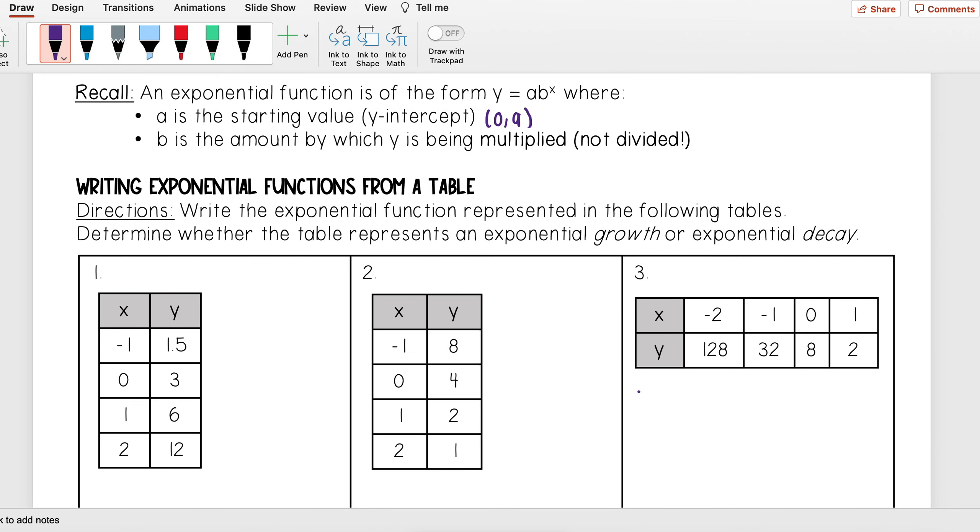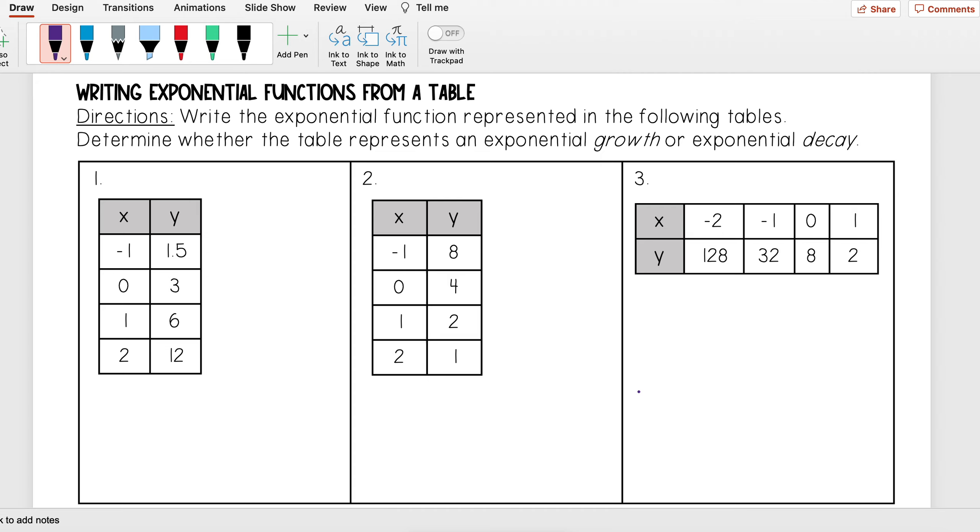Looking at this first example, it says to write the exponential function represented in the following tables and then determine whether the table represents exponential growth or exponential decay. I know that the equation is y equals a times b to the x, so I need to figure out what my a is and what my b is.